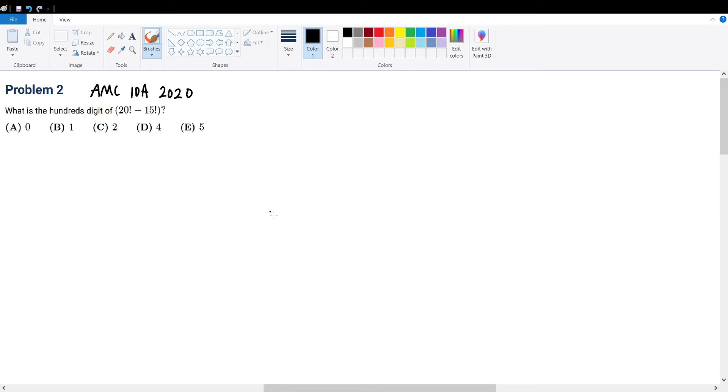AMC 10A 2020 problem 2. What is the 100th digit of 20 factorial minus 15 factorial?